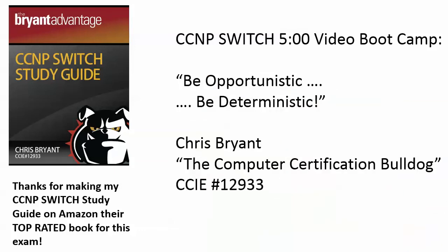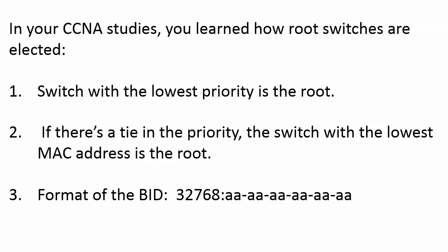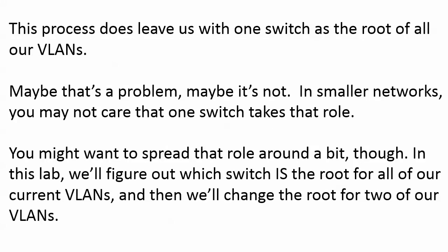We're going to talk about a little bit of theory for about 30 seconds and then we'll be on the live equipment after that. In your CCNA studies, I want to give you a quick review on this because we learned how root switches are elected early in our studies. First, we know the switch with the lowest priority is going to be the root. If there's a tie in the priority — say if we left all of our switches at the default — then it's going to be a tie because that default is 32768. The switch with the lowest MAC address then will be the root. So it's a situation where we may have a problem and we may not, because this isn't as cut and dry. This process is going to leave us with one switch as the root of all of our VLANs.